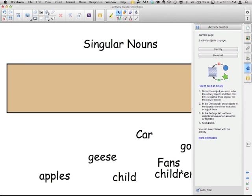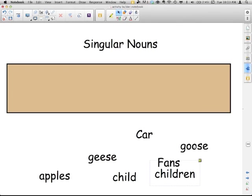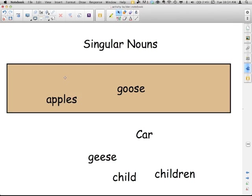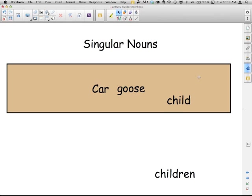I'll go ahead and get rid of this box now. So, goose. Is it a singular noun? Yes, it is. Nothing happens. It stays there. Fans. Is it a singular noun? Nope. It disappears. Apples. Is that singular? No. Geese. No. Car. Yeah, it's singular. So, what does it do? Nothing. It stays. Child. Stays. Children. Disappears.